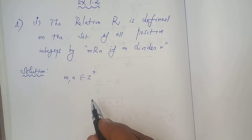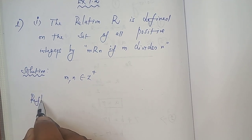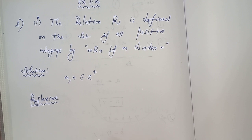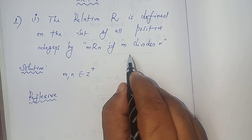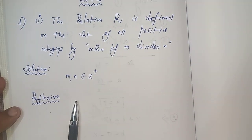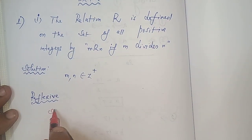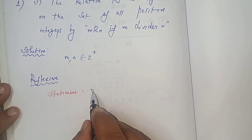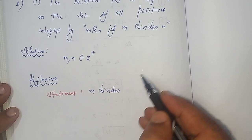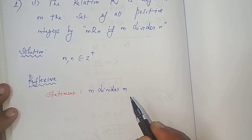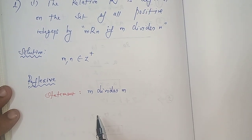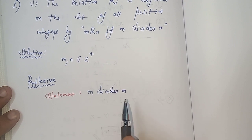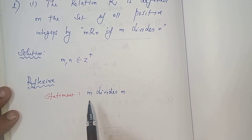We can verify one by one. Start with reflexive. For reflexive, first you have to write the statement. The statement is: m divides n. For reflexive, instead of n you have to take the same m only. According to the definition, a is related to a only, so here m divides m. Yes, obviously a number is divisible by the same number.